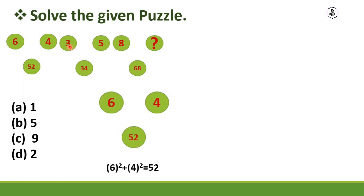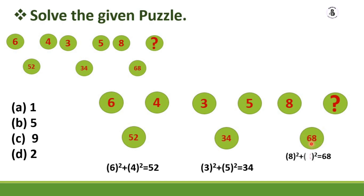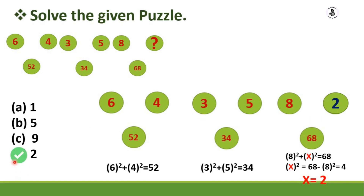The same pattern is followed by 3, 5, 34: 3 squared is 9, plus 5 squared is 25, giving 34. Now applying this pattern: 8 squared plus x squared equals 68. Finding x squared: 64 plus x squared equals 68, so x squared equals 4, meaning x equals 2. Replacing the question mark with 2 satisfies the puzzle conditions. Option D is the right answer.